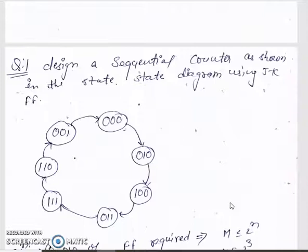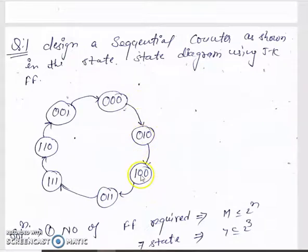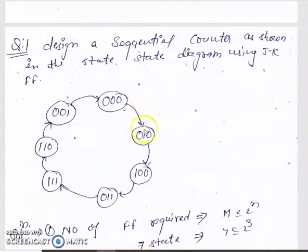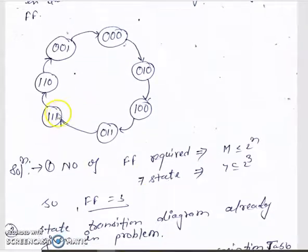Next example: design a sequential counter as shown in the state diagram using JK flip-flops. In this problem, the state transition diagram is given with the sequence: 0, 2, 4, 3, 7, 1, 2, 0, 6 and so on. It is not in increasing order — the sequence is given by the examiner. The mod is 7, so 7 ≤ 2^n.